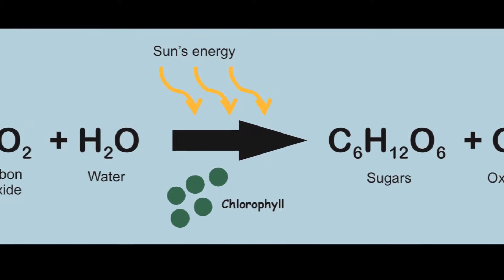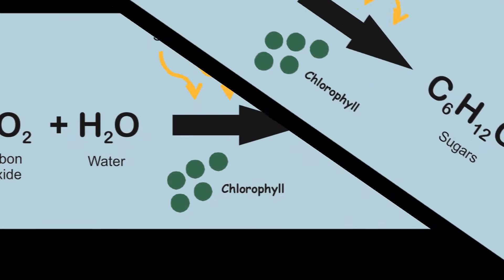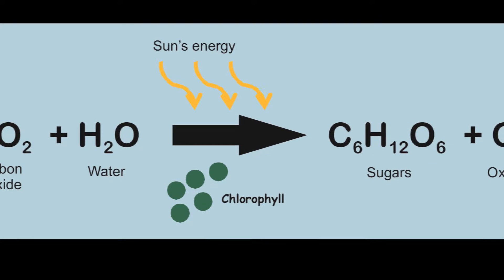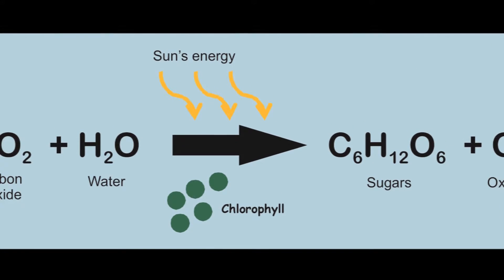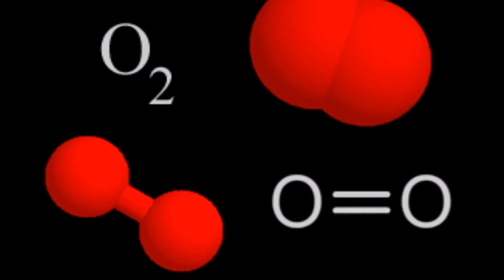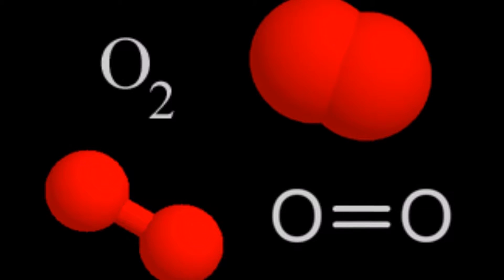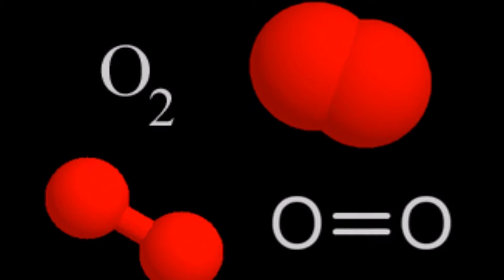Step number two: carbon dioxide is absorbed by producers to make carbohydrates in photosynthesis. These producers then put off oxygen.